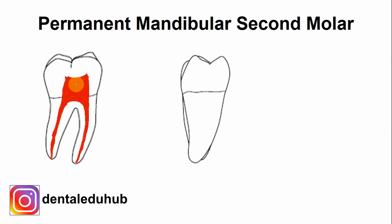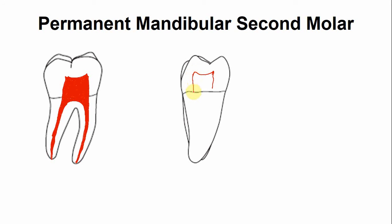Now this is the buccolingual section from the mesial aspect. This is the mesiobuccal pulp horn and this is the mesiolingual pulp horn. The mesiolingual pulp horn is more prominent as compared to the mesiobuccal pulp horn.